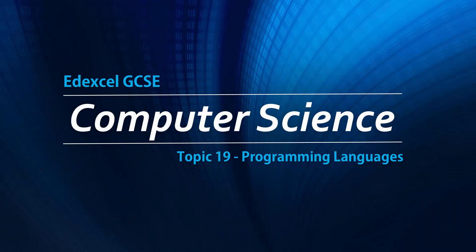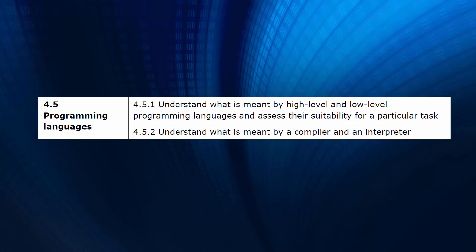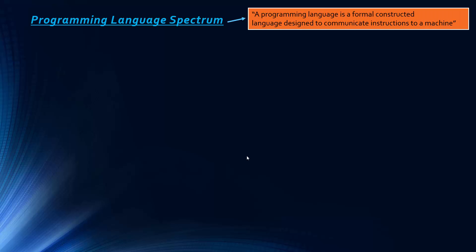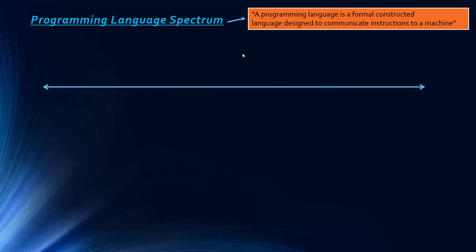Welcome to the 19th topic of the course. We're looking at programming languages in this video — high level, low level, and also two types of translator: the compiler and the interpreter. Let's begin by looking at what I like to call the programming language spectrum.